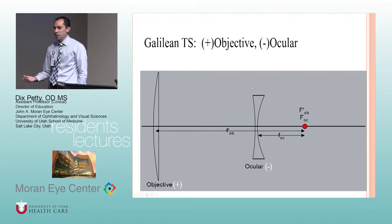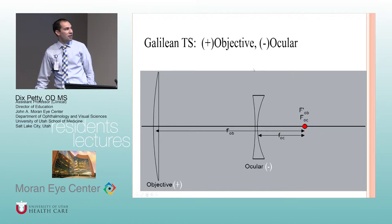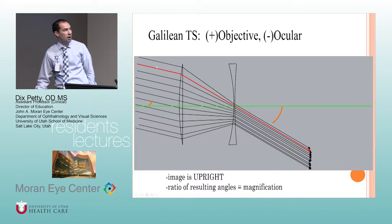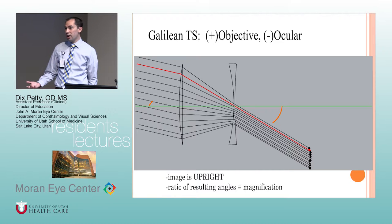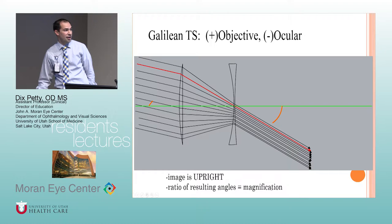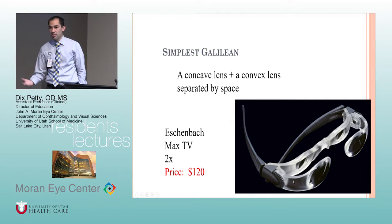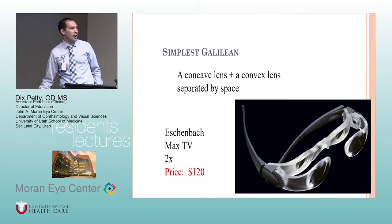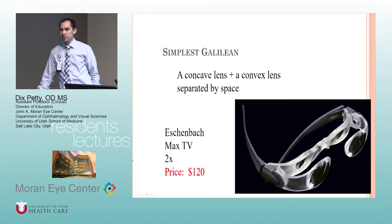Galilean telescopes use a plus objective lens and a minus ocular lens. Since the focal points meet up behind the ocular lens, these tend to be shorter than astronomical telescopes. With a Galilean, parallel rays enter and leave the system such that the image is automatically upright — no reinverting optics needed. The simplest type: you can get a plus lens and a minus lens. The Max TV is one example — a low-power 2x device people use to watch TV.